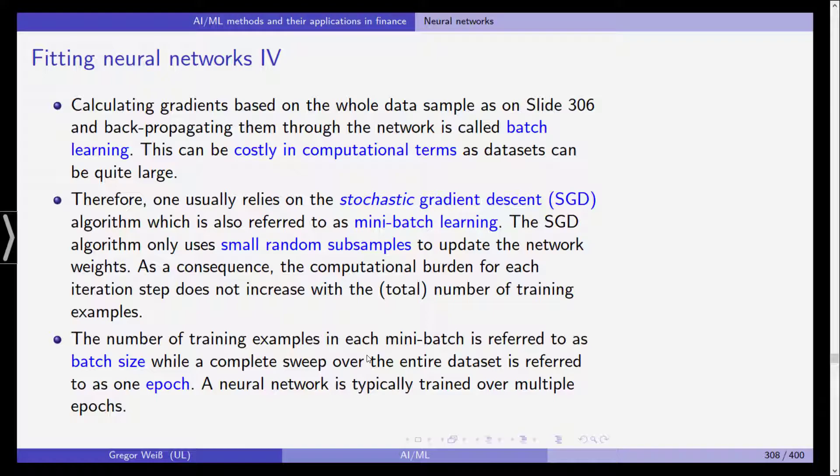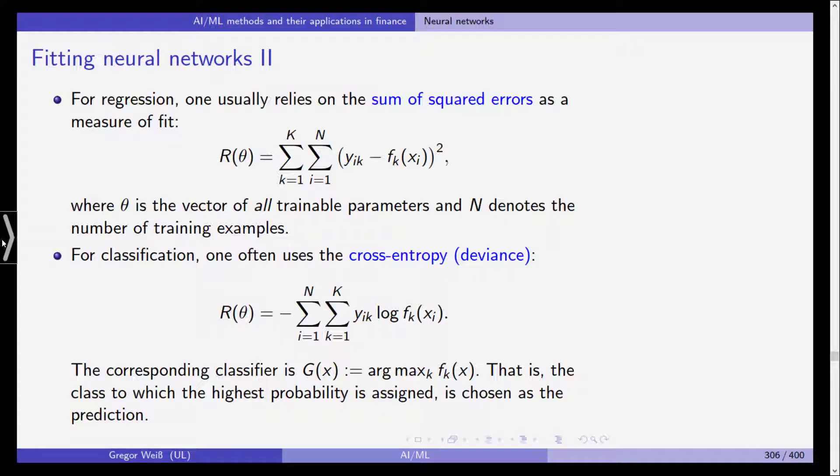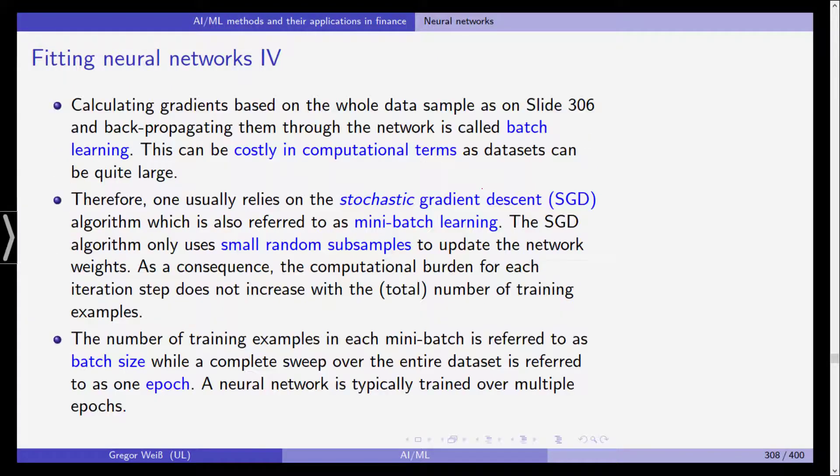Now calculating the gradient based on the whole data sample, if you take a look at this function R here, you can see that this is based on all N observations. And to calculate the gradient, you have to go through all the data, all the training observations. Again, to calculate the gradient, you need to go through all N examples or training observations. And this is called batch learning. And this can be quite costly in terms of computational time, because if the data set is quite large, computing the gradient also needs a lot of time.